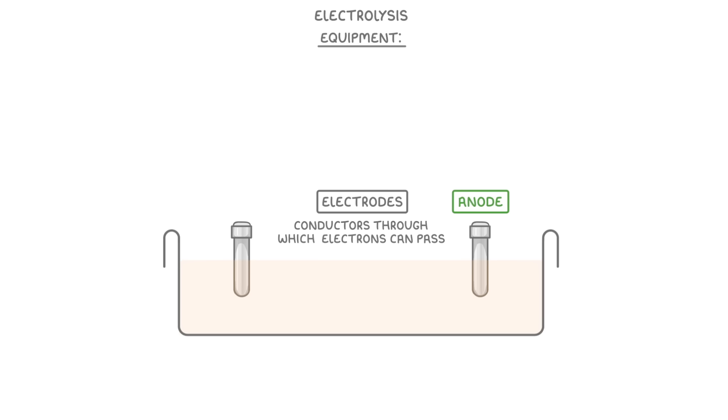And on the left, we have the negative electrode, which we call the cathode. Then we connect these with a wire and some sort of power source, like a battery, so that electrons can flow in a complete circuit.